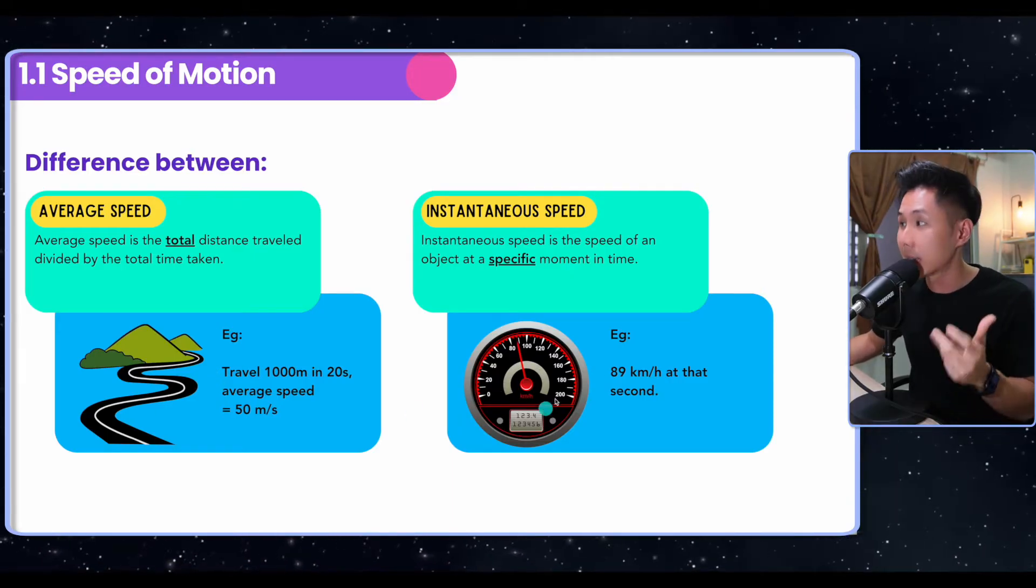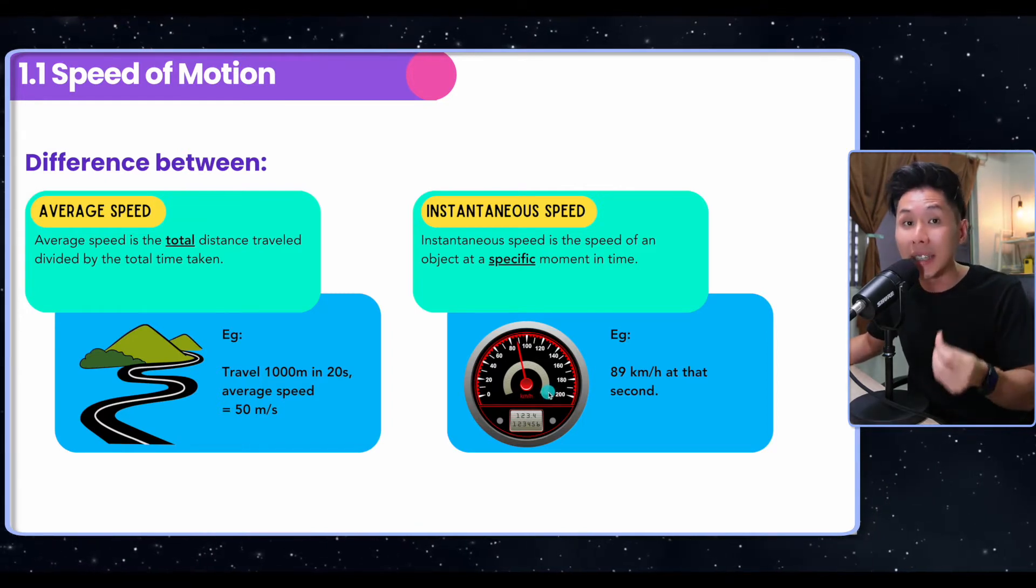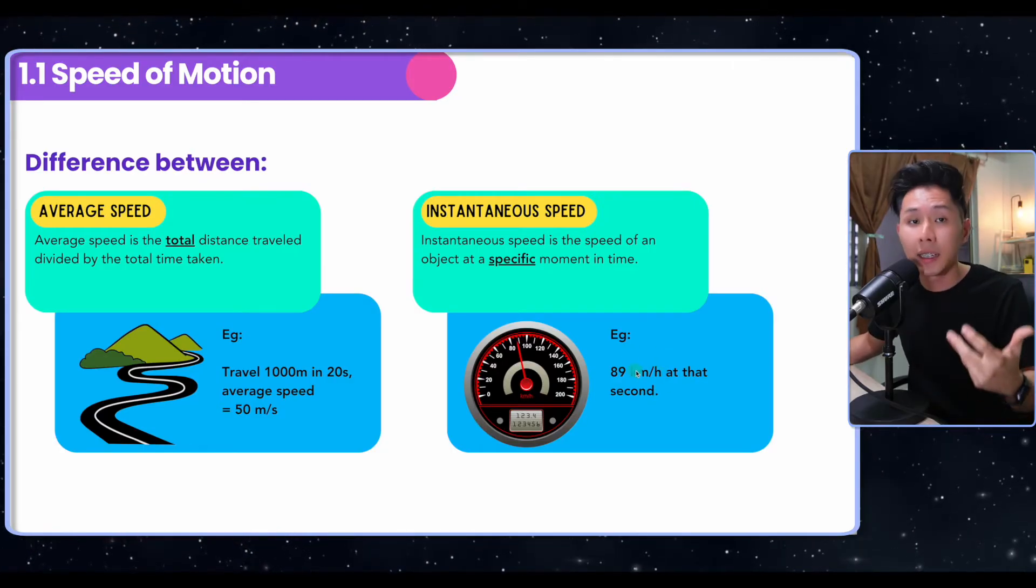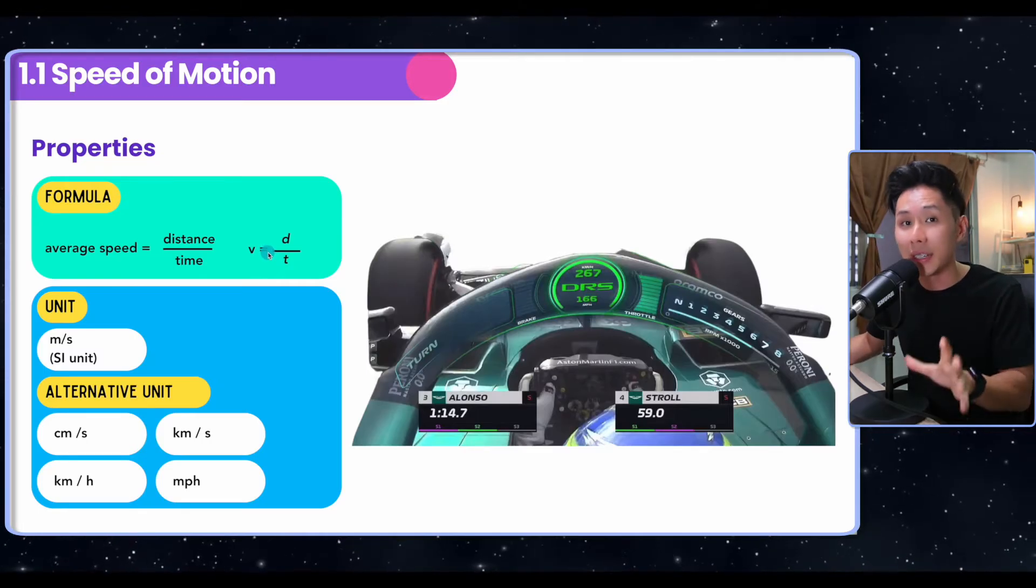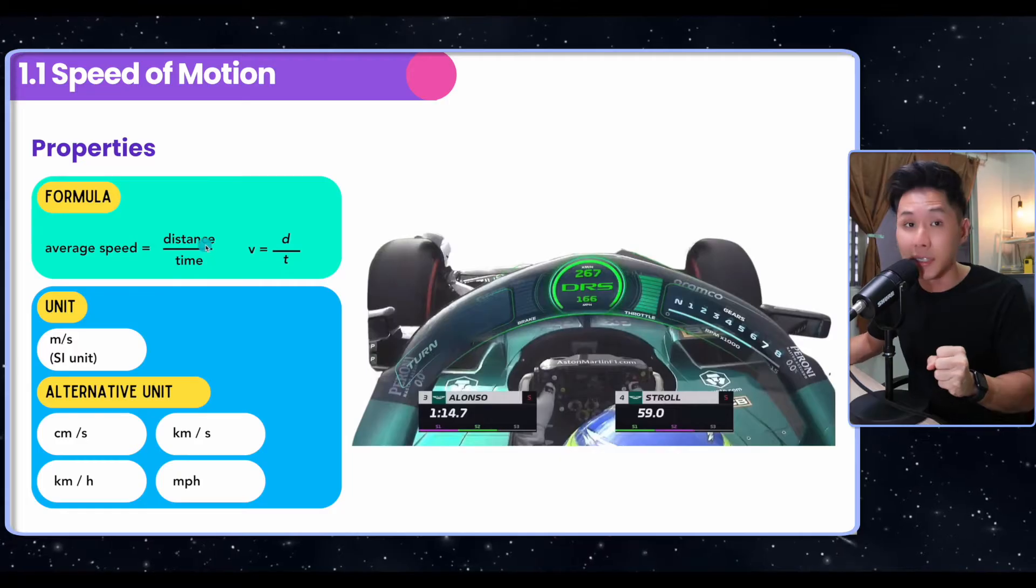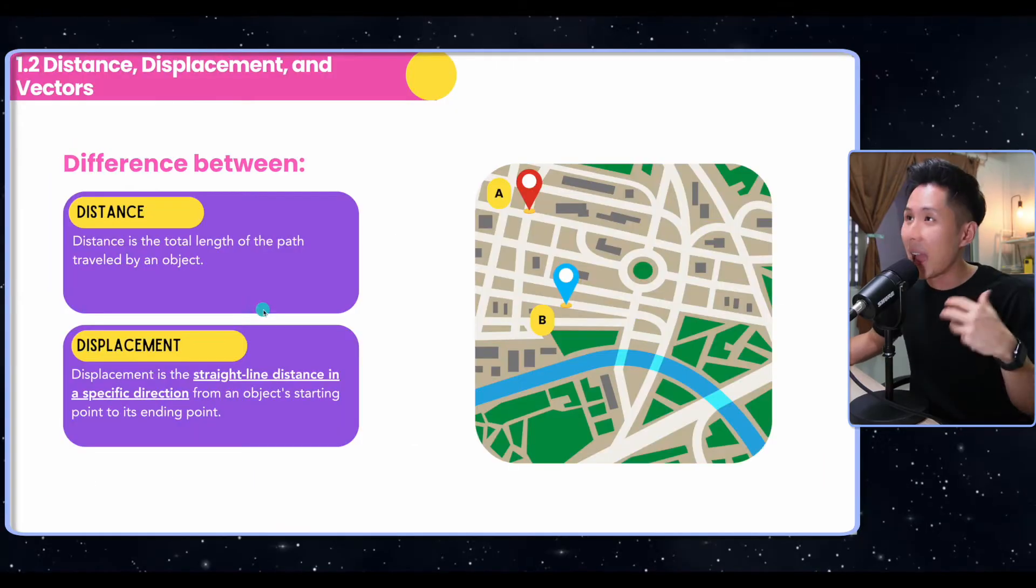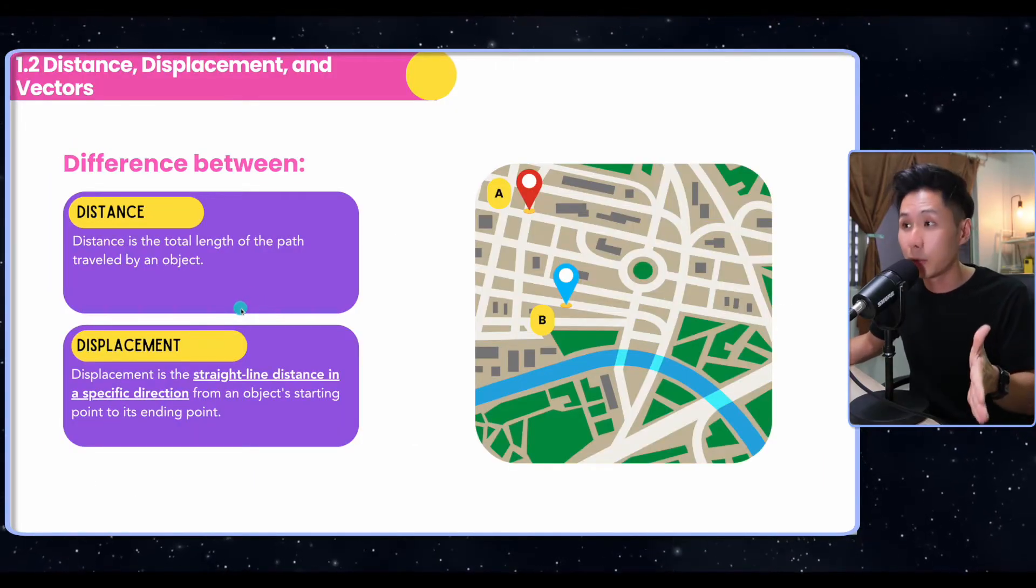Average speed gives you your average speed for that entire journey, whereas instantaneous speed is more on describing the speed in that instant. For example, in that second your speed is 89 kilometers per hour. Here is the formula to calculate speed. We have learned that in IGCSE already. This is just a recap. The formula is distance over time and the unit is meter per second. You can also use alternative units.